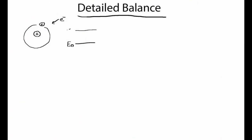Let's say we just have two states, one with energy E0 and the excited state with energy E1. Now let's get a whole bunch of these atoms together and start talking about what kind of population we have in state E0 versus state E1. One could imagine that they all start in E0 and occasionally one of them pops up into E1.